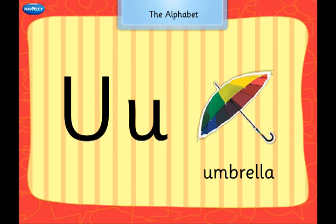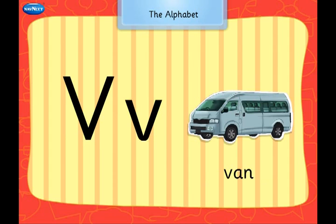U says U, U, Umbrella. V says V, V, Van.